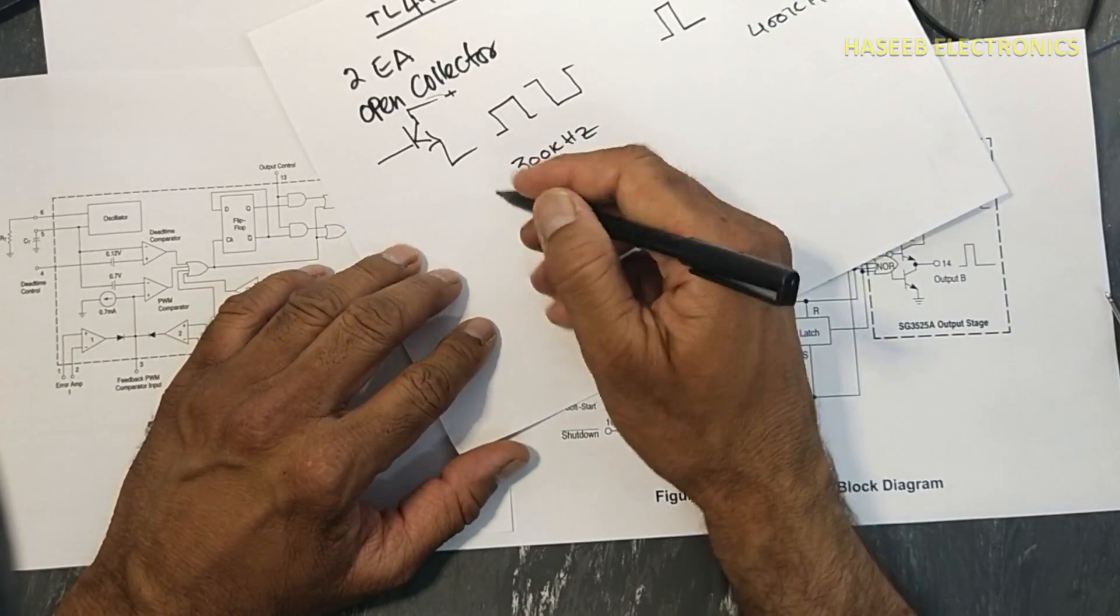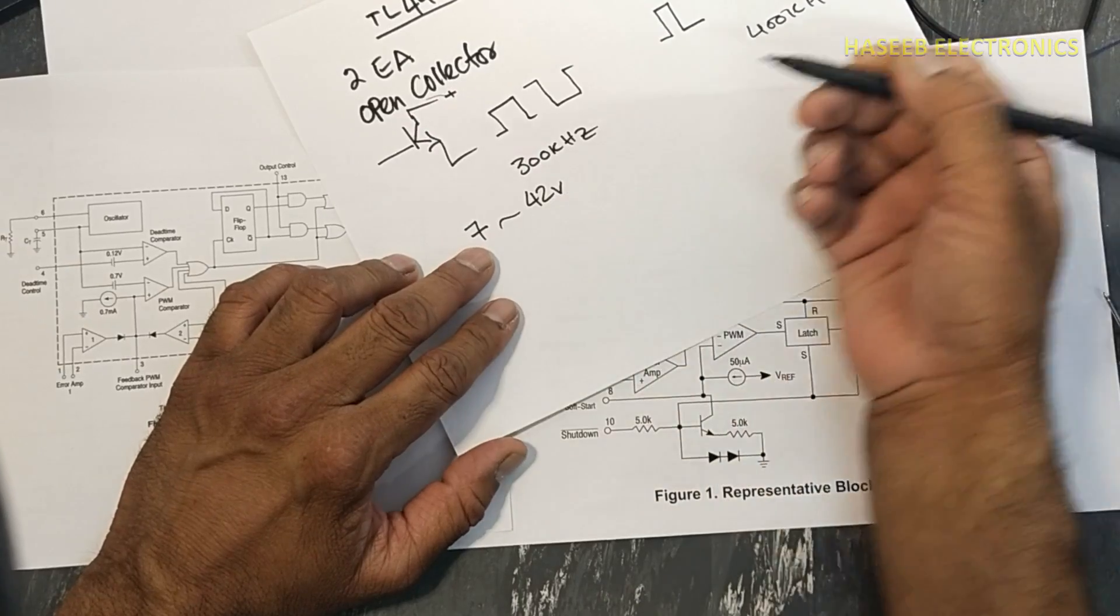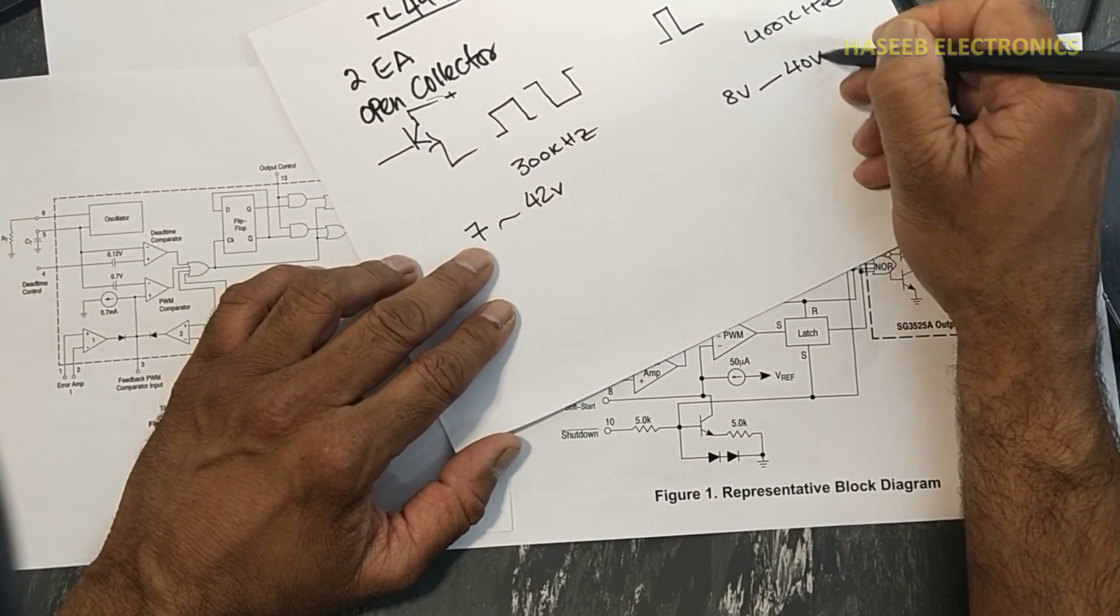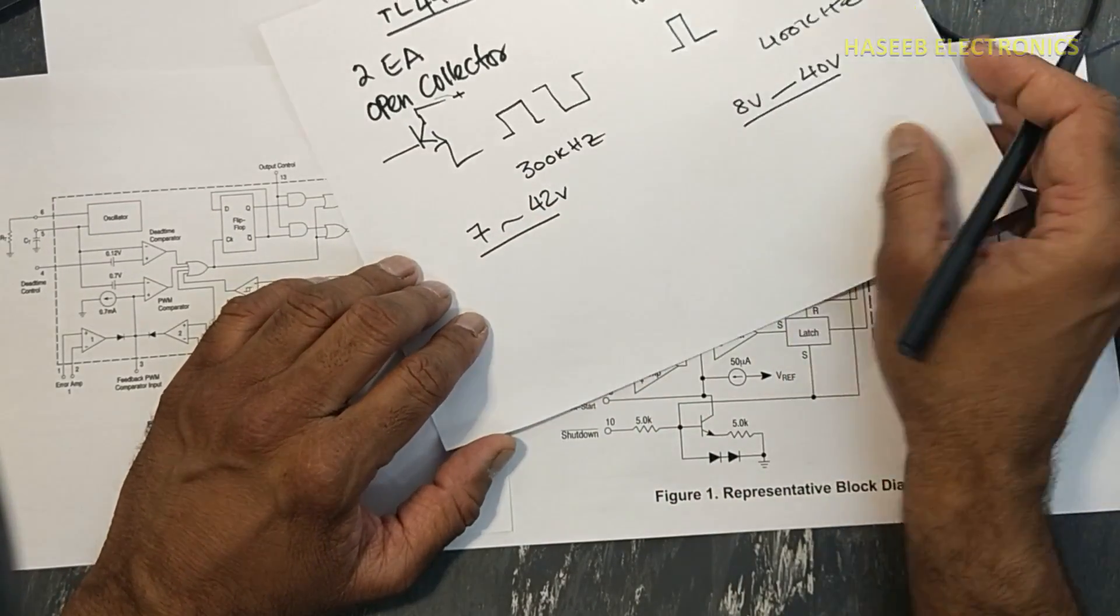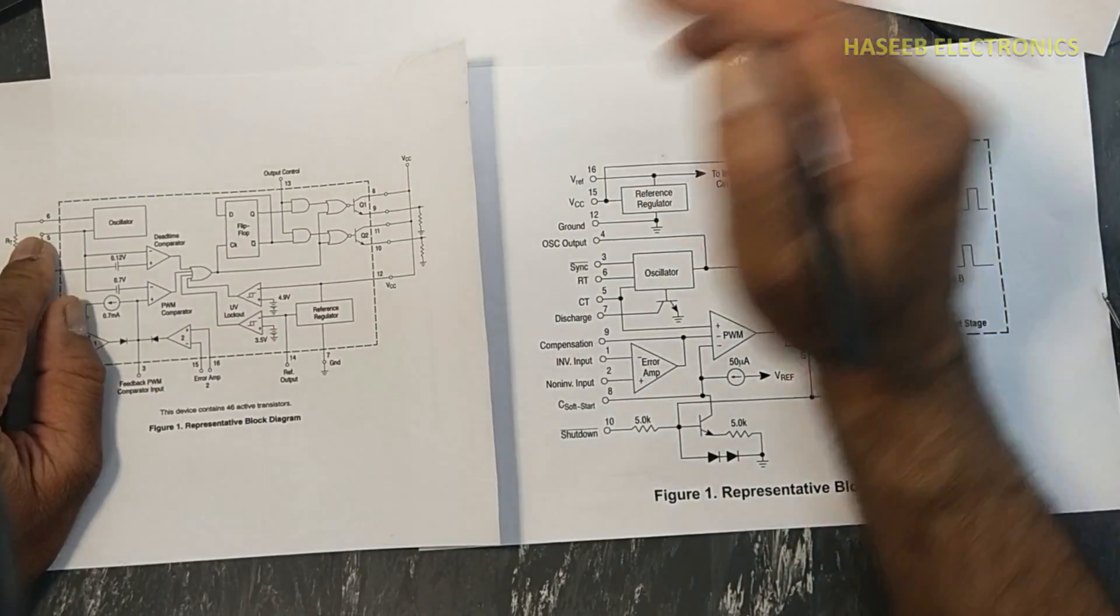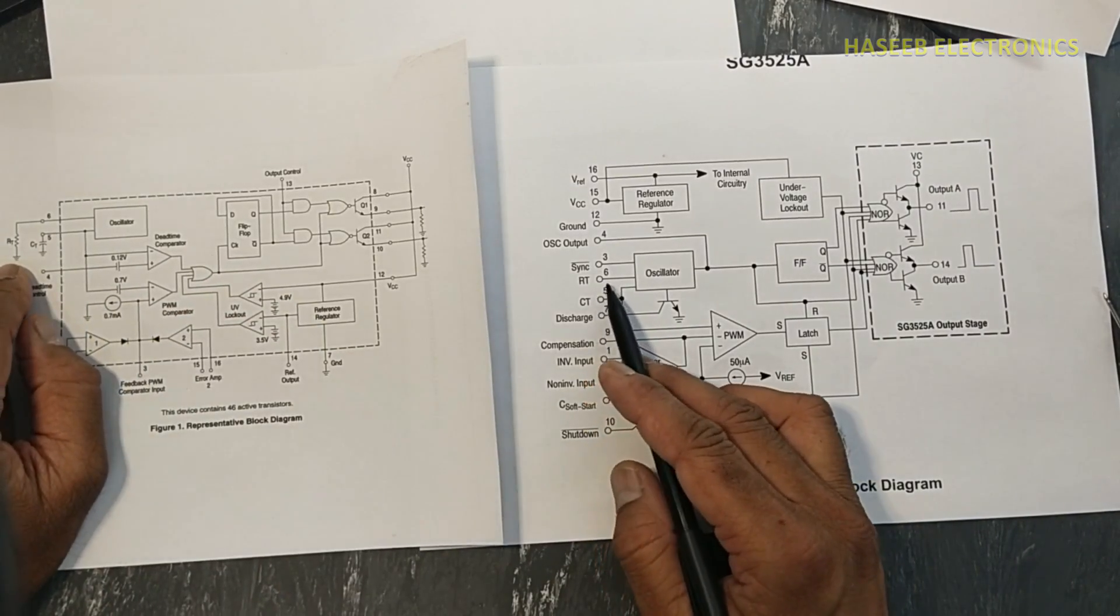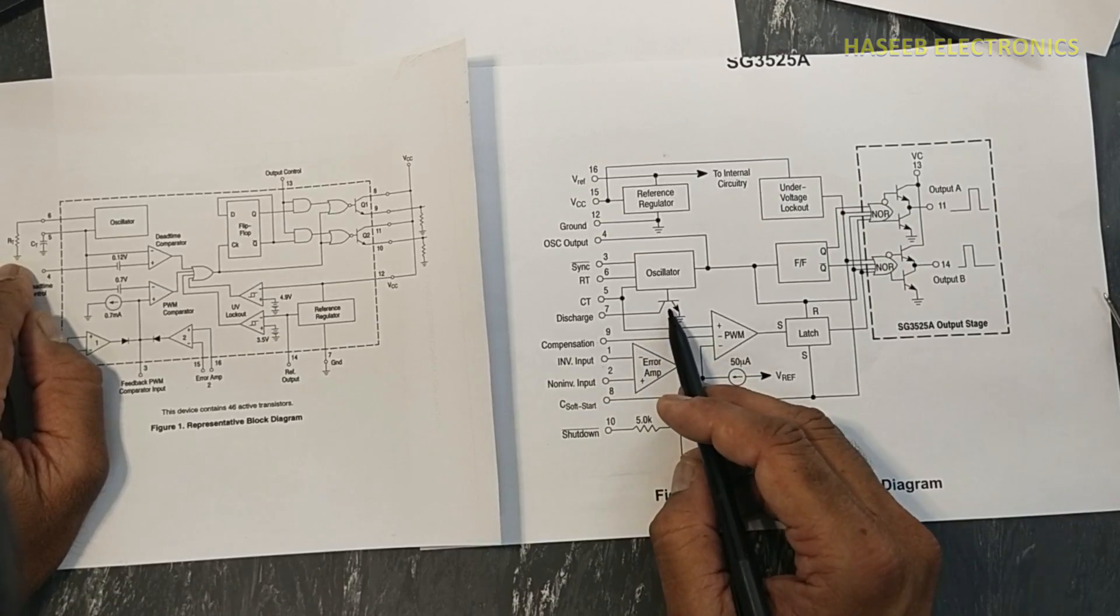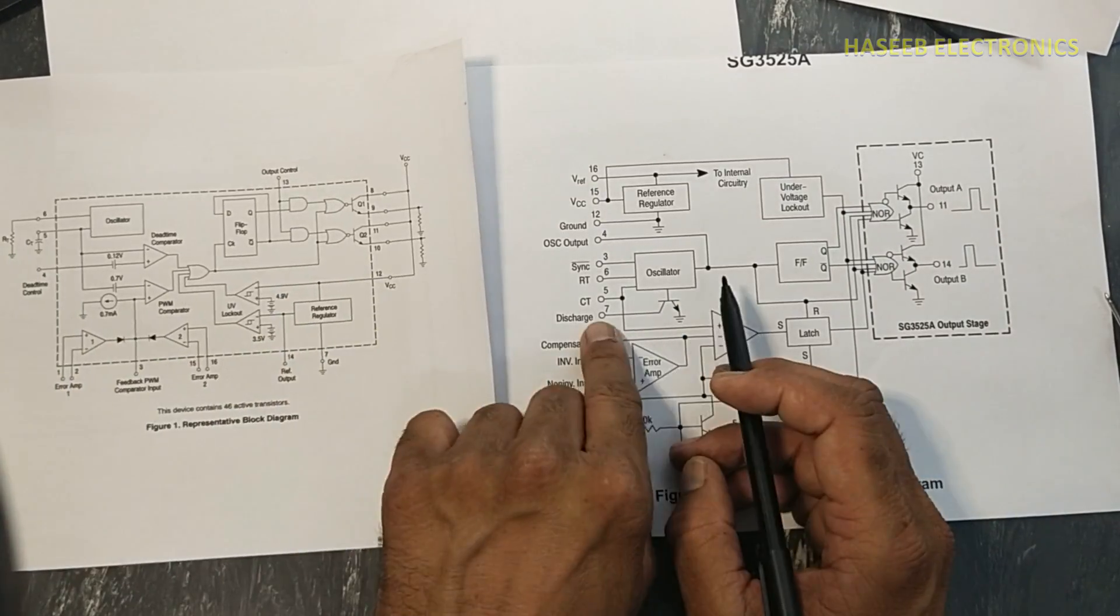Then the supply voltage, it is from 7 to 42 volt, and it is 8 volt to 40 volt. So we can say the voltage range is similar. Then for oscillator, here it is using RT and CT. Here is oscillator RT and CT. But in this IC there is an additional component, that is discharge pin, that is pin number seven.